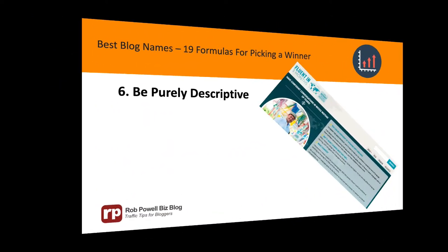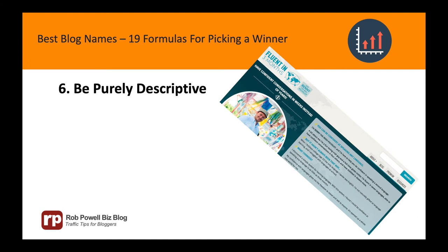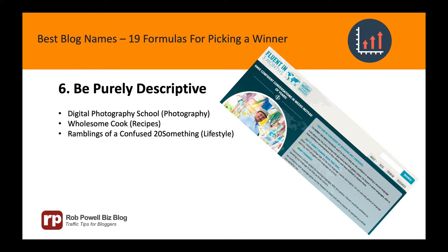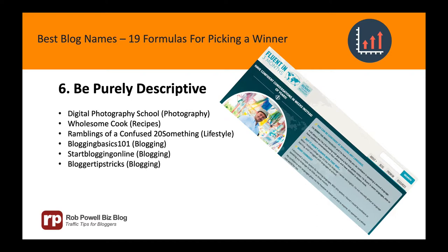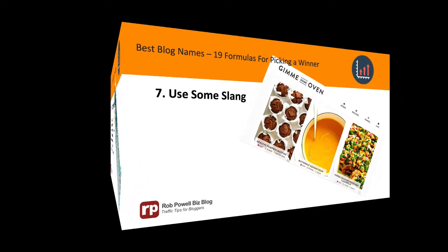Formula 6: Be purely descriptive. Some blog titles are simply descriptive without any attempt at humor or double entendre. For example: Digital Photography School, Wholesome Cook, Ramblings of a Confused 20-something, Blogging Basics 101, Start Blogging Online, Blogger Tips and Tricks, and Fluent in 3 Months.